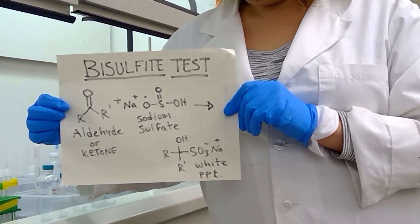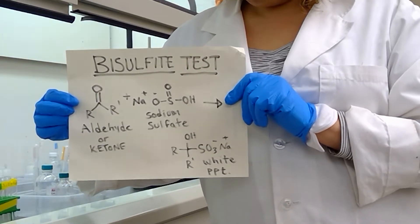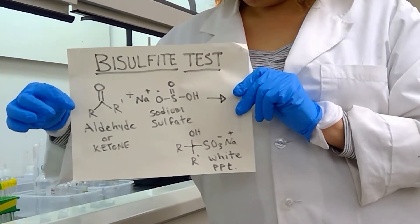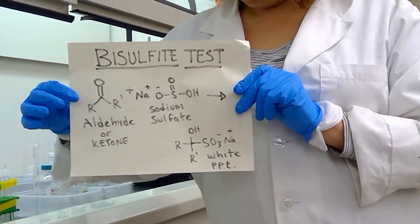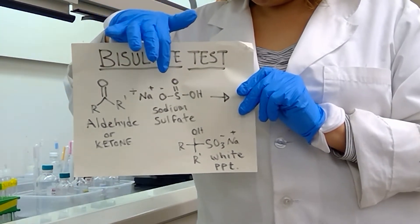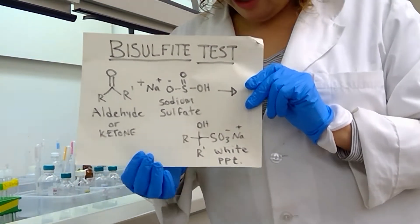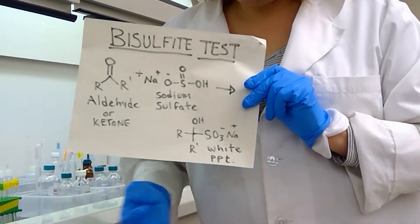First off, we are starting with a bisulfite test. So in this schematic, I have a general ketone and we are working with the compound sodium bisulfite. And we will hopefully make a white precipitate salt.